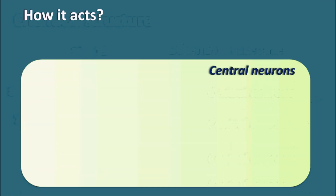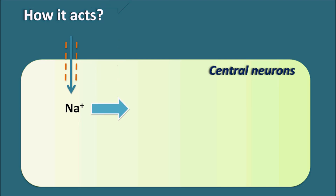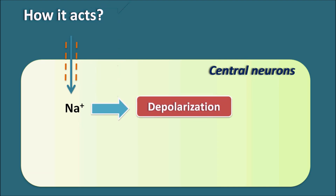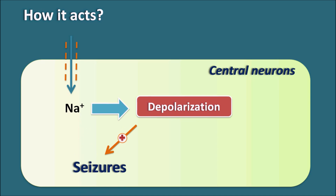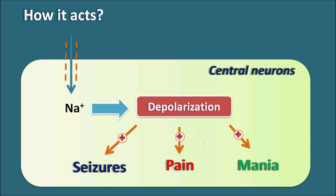How does carbamazepine act? Central neurons are stimulated by the entry of sodium into the cells. Sodium is responsible for depolarization, which can lead to many neuronal activities. Excessive CNS stimulation can induce seizures. Depolarization of neuronal cells can also increase nociception, inducing pain within the neurons, and can also cause the manic phase in susceptible patients. Even though the physiological mechanisms behind these conditions differ, all are related to excessive stimulation of sodium channels within the central neurons.